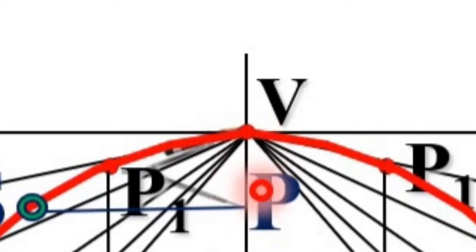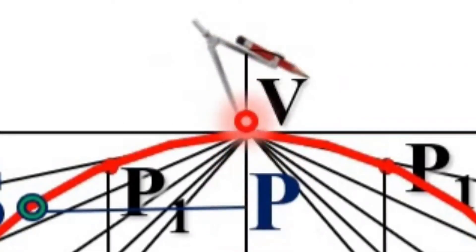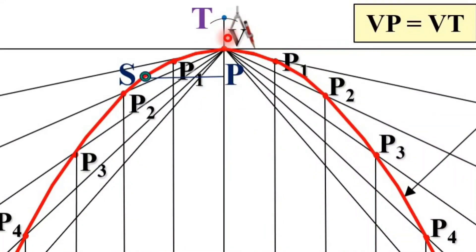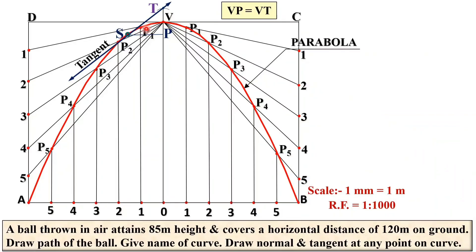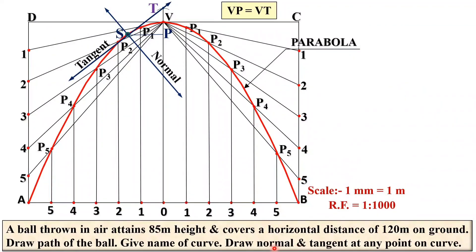Now take the compass, set the radius as VP. Next, take V as the center, draw the arc on this side. You will get the intersection point, mark it as T. Keep in mind that over here, this VP must be equal to VT. Now join ST. That will give you as a tangent, and perpendicular to this tangent will give you as a normal, and that definitely you can do with the help of the scale. This is your final answer, normal and tangent at any point on the curve.